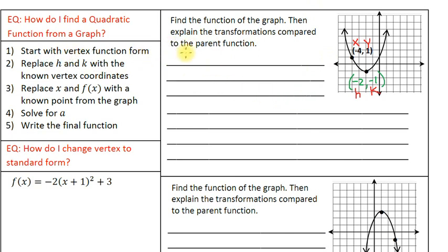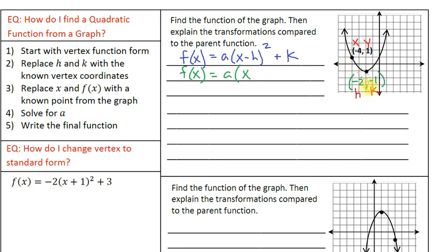Step one: start with vertex function form — f(x) = a(x − h)² + k. Step two: replace h and k with the known vertex coordinates. We rewrite the equation replacing h and k. Since h is negative 2, we get x minus negative 2, which becomes x plus 2. The k value is negative 1, so we keep the sign.